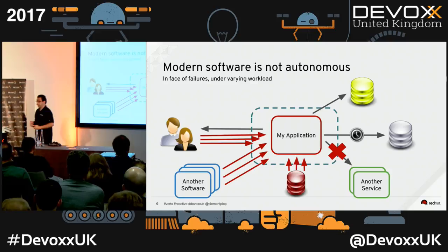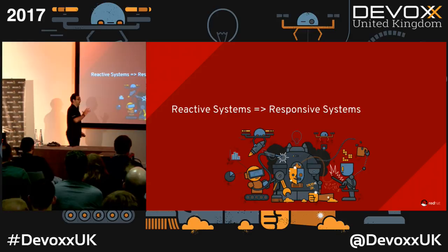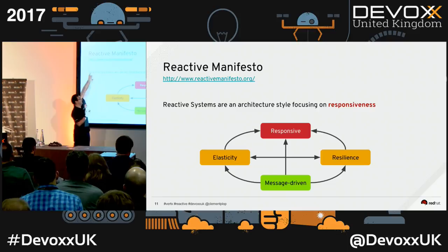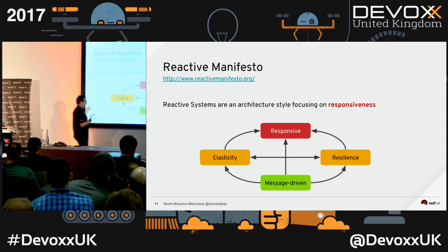Reactive systems is an architectural style to build such systems in a reliable and responsive way. It has been defined by the Reactive Manifesto — you can read it, it's two or three pages. It focuses on responsiveness. One main thing is asynchronous message passing — all your components discuss using messages.